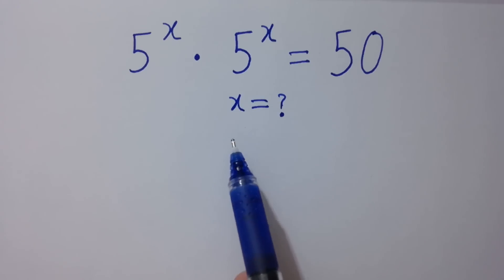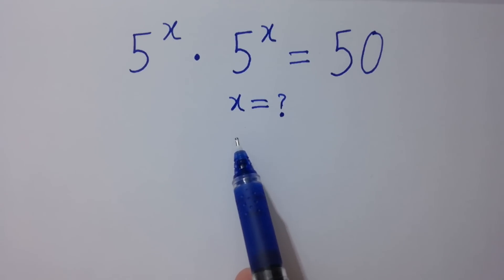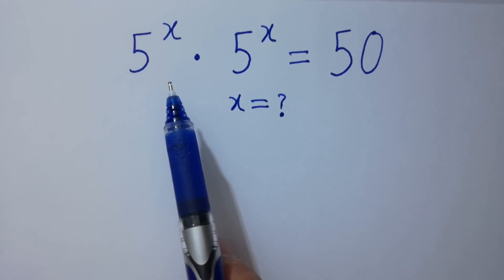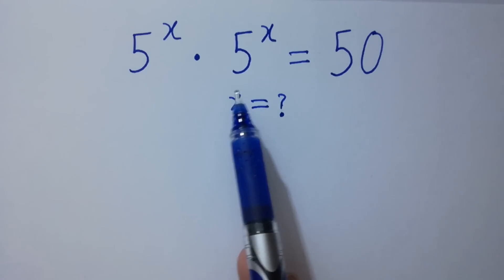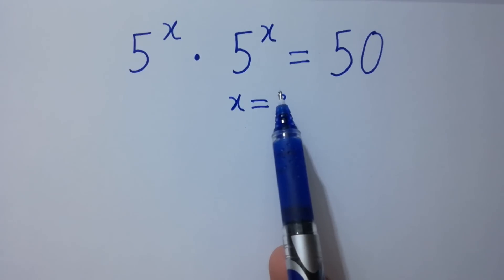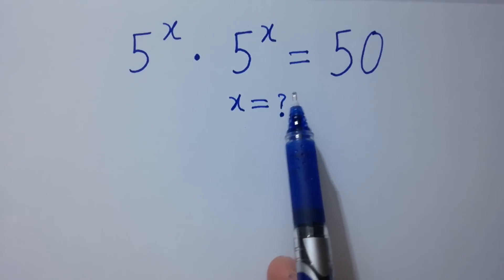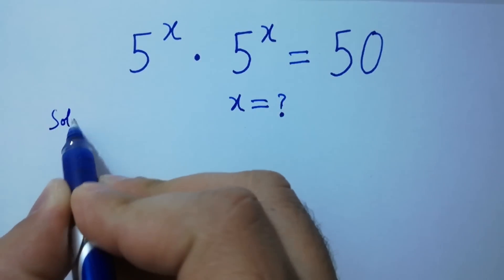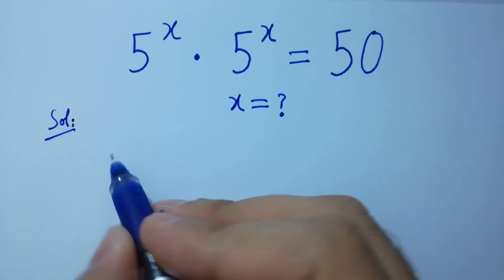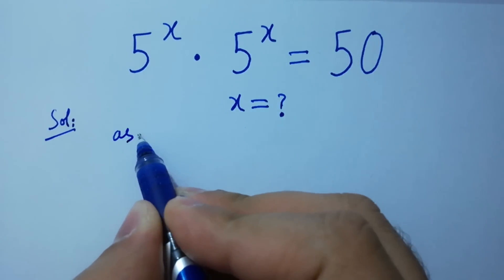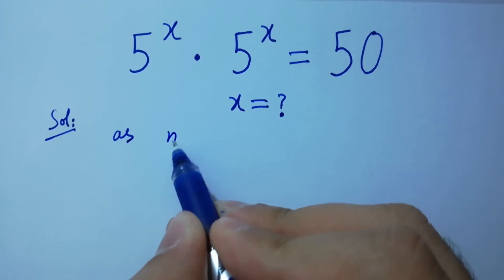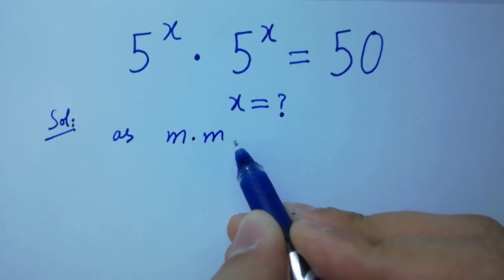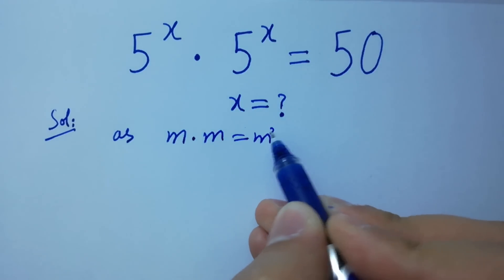Hello friends, find the value of x if 5 to the power x times 5 to the power x equals 50. Let's have a solution. As we know, m times m equals m squared.